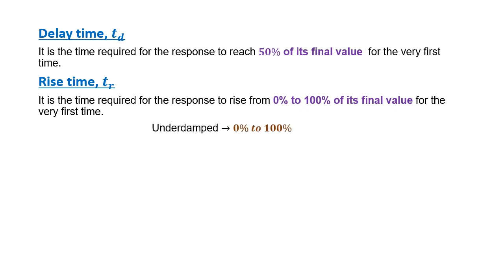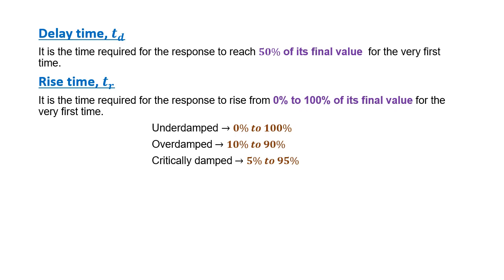This percentage differs when the system type differs. For an underdamped system, the rise time is measured from 0% to 100%. For an overdamped system, it is from 10% to 90%. For a critically damped system, the rise time is measured from 5% to 95%.